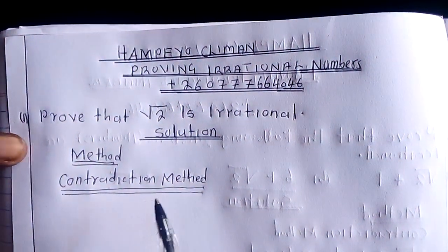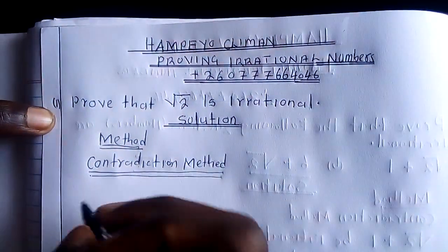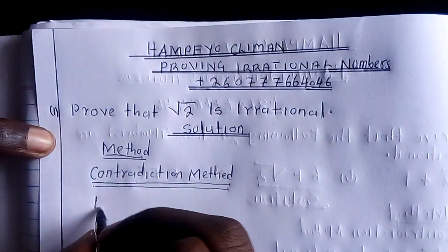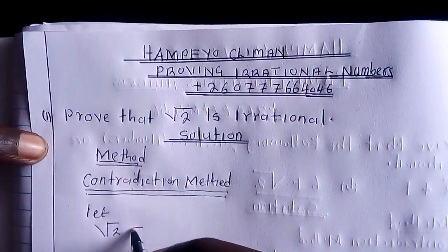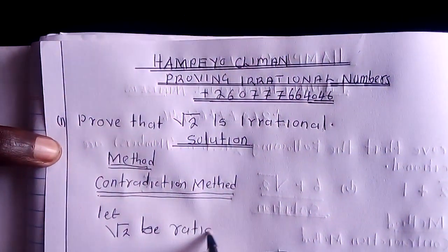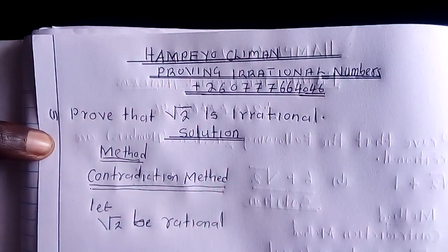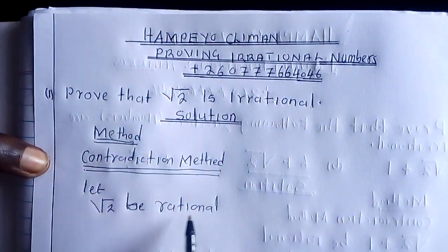So instead of saying that square root of 2 is irrational, we are going to say let square root of 2 be rational instead. We make an assumption of this kind. Then we are going to say that if this is rational...